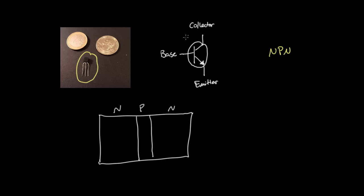This is the circuit diagram for a transistor, and it has three leads coming off of it: there's an emitter, a base, and a collector. If you look at the actual physical transistor, there are three leads coming off of it. This is the emitter, the middle one is the base, and this is the collector — although that's not really standardized; in this particular case, that's how it works.